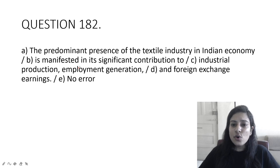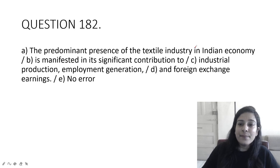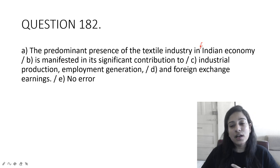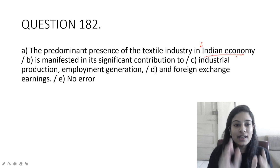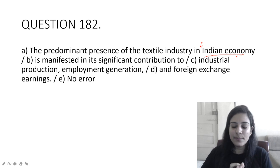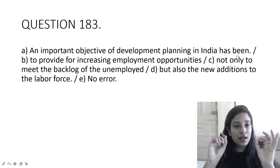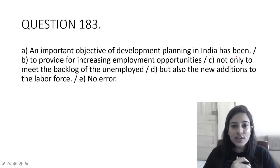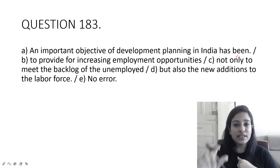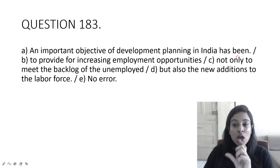The poverty estimates indicate that the highest poverty headcount ratio exists in Bihar at 54% as against the national average of 30%. You have to put ratio here singular, exists is correct. The predominant presence of the textile industry in Indian economy is manifested in its significant contribution to industrial production, employment generation and foreign exchange earnings. You will have to put the article here. It should be in the Indian economy.